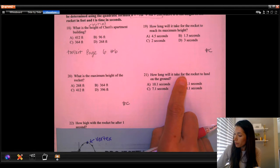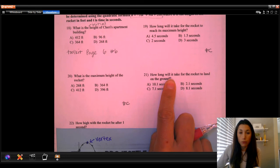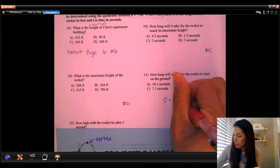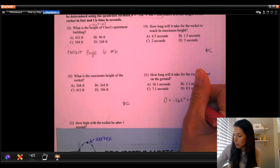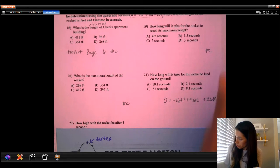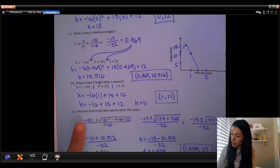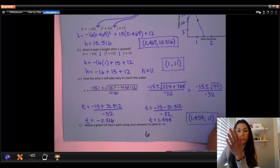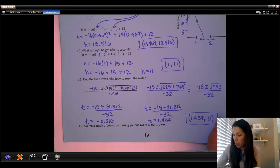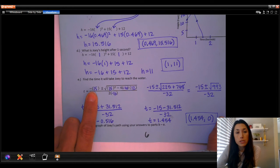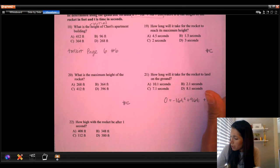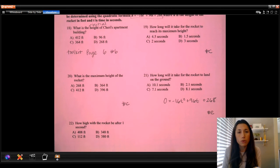Okay, how long will it take for the rocket to land on the ground? If we're landing on the ground, we're essentially setting the height equal to zero. On your toolkit, it's actually question E. Find the time it will take Joey to reach the water or to reach the ground or some height of zero, essentially. You're going to want to use the quadratic formula for this question. For some questions, you might be able to factor them, but I would say using quadratic formula, you're going to be able to use that every single time.